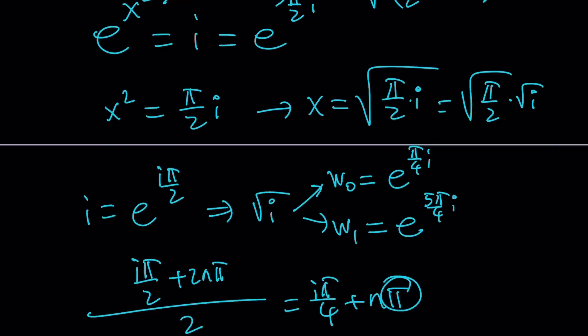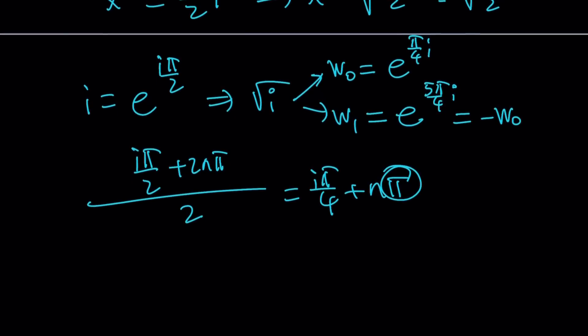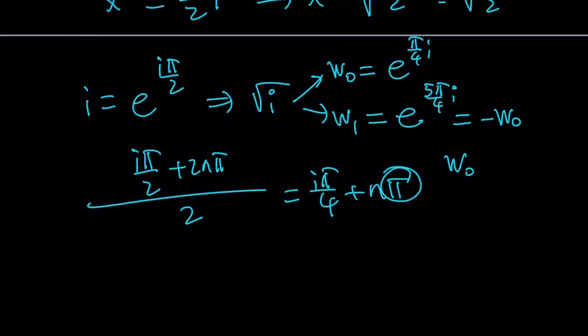And notice something about this: when you expand it with the cosine and sine, 5 pi over 4 is in the third quadrant. Pi over 4 is here, 5 pi over 4 is that plus pi so it's in the third quadrant. Therefore both the cosine and the sine values are going to be negated, and that kind of makes sense because if you think about the square roots, one of them must be the opposite of the other because when you square you get the same number, right? Exactly. So in this case w zero squared equals i, and this is true for both of the solutions.